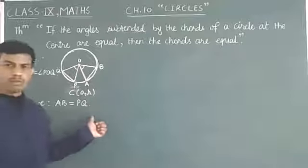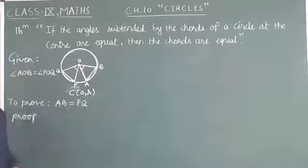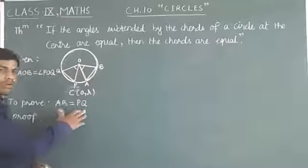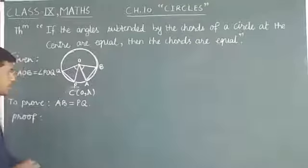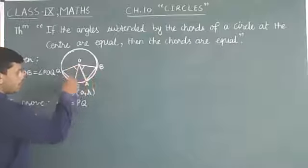In order to prove AB equals PQ, we must observe two triangles of which AB and PQ are parts. Such two triangles are triangle AOB and triangle POQ.